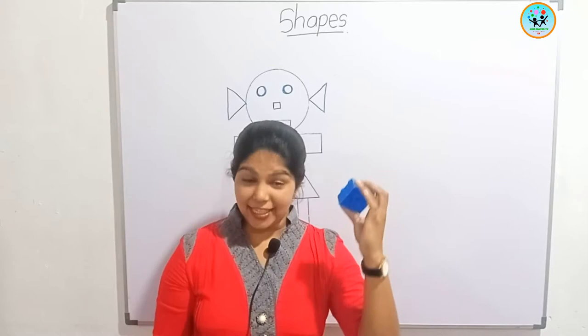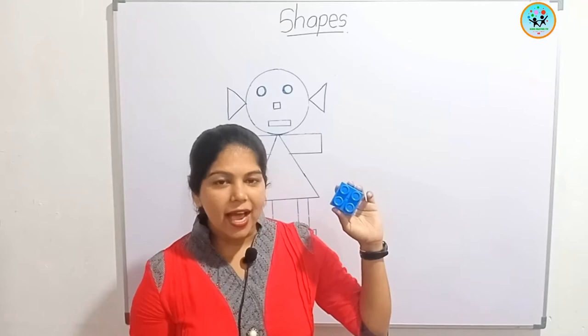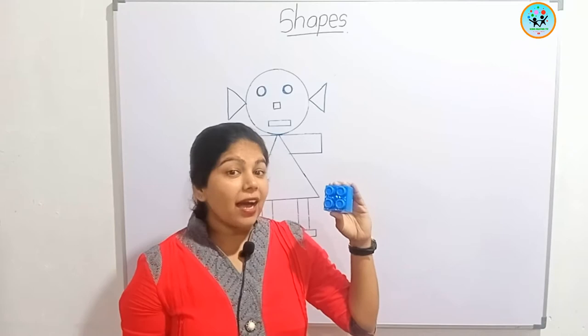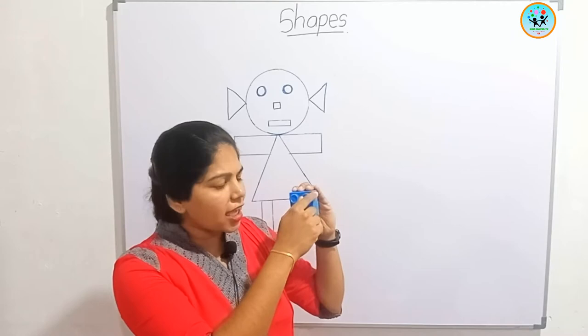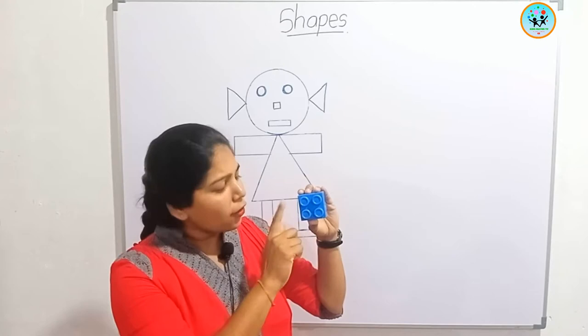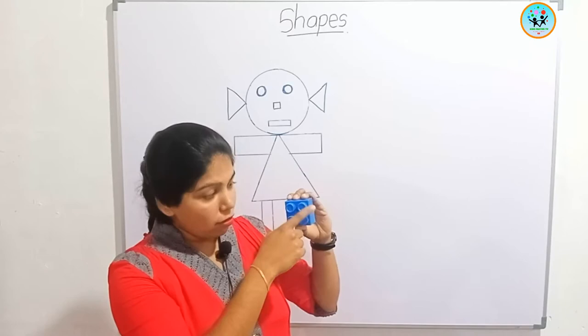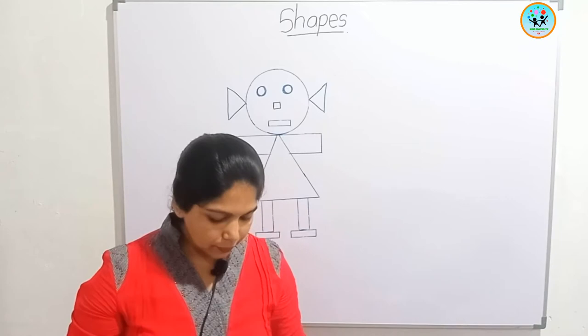Do you know this? This is a building block. What is the shape of this box? Yes, it is a square. How many sides are here? One, two, three, four — four sides. The four sides are equal.